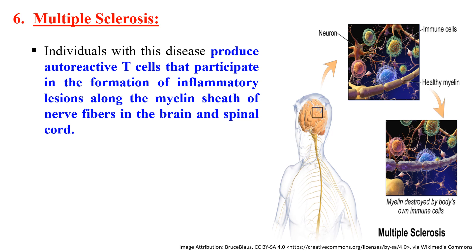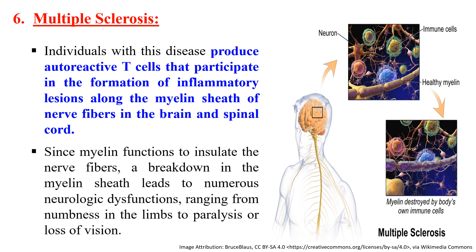The next example is multiple sclerosis, a disease of the myelin sheath. Auto-reactive T cells, which are reactive against self cells, bind to and degrade the myelin sheath present along the nerve fiber. The myelin sheath protects and insulates the nerve fiber, so its breakdown leads to neurological dysfunctions such as numbness in limbs, paralysis, or loss of vision. Multiple sclerosis is an autoimmune disease caused by auto-reactive T cells degrading the myelin sheath.